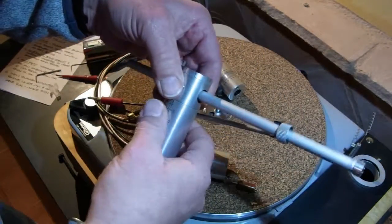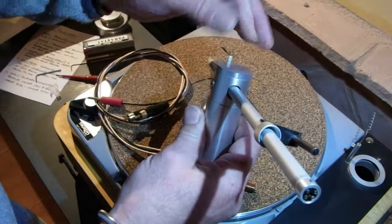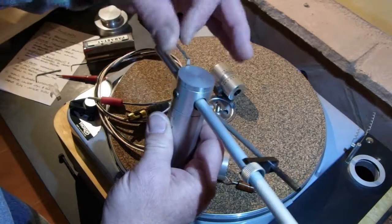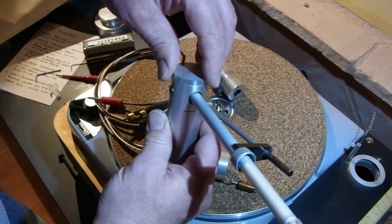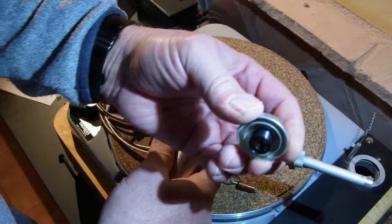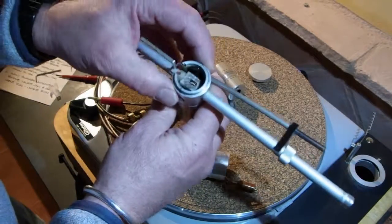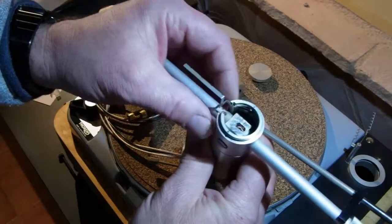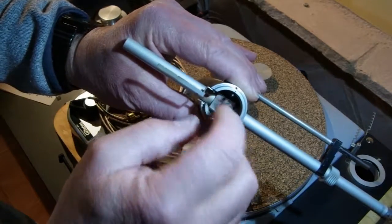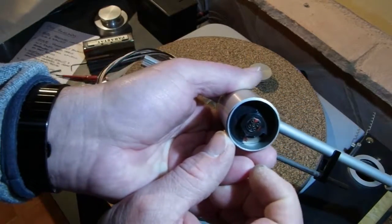We'll take the VTF tracking force setting dial off the top of the tonearm. And you'll be able to see the spring inside here used for setting the tracking force, and also inside the tonearm pillar. As you can see, there's the tracking force spring. And inside the pillar, you can see the tonearm wires there, which are passing down the tube and then down the pillar to the 5-pin DIN connector on the bottom.